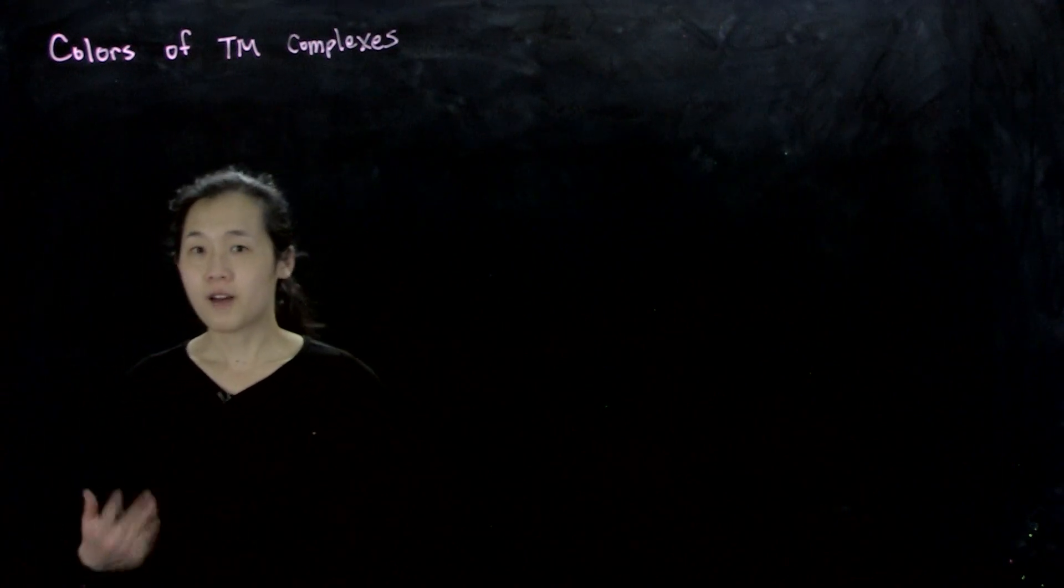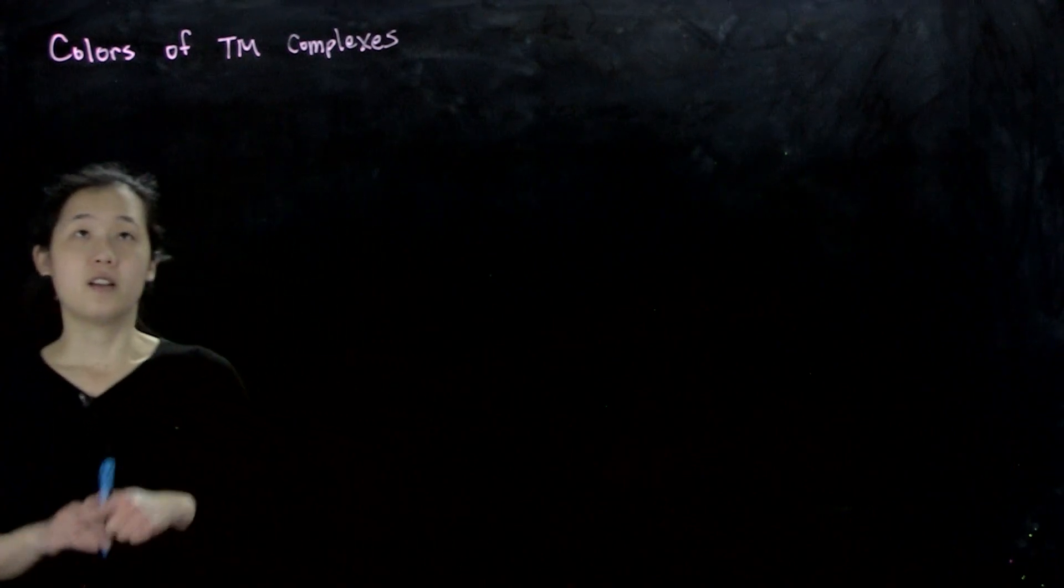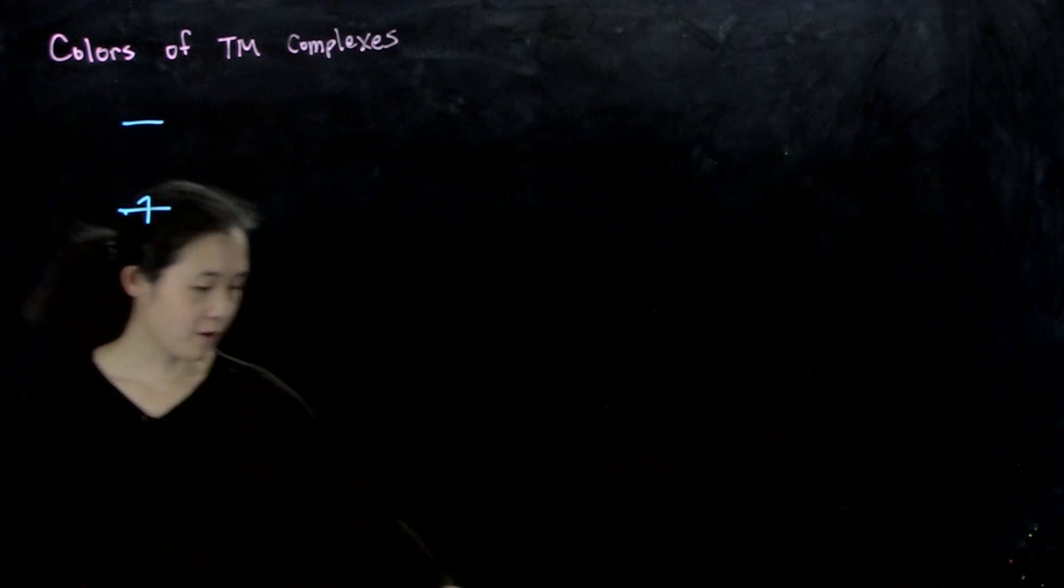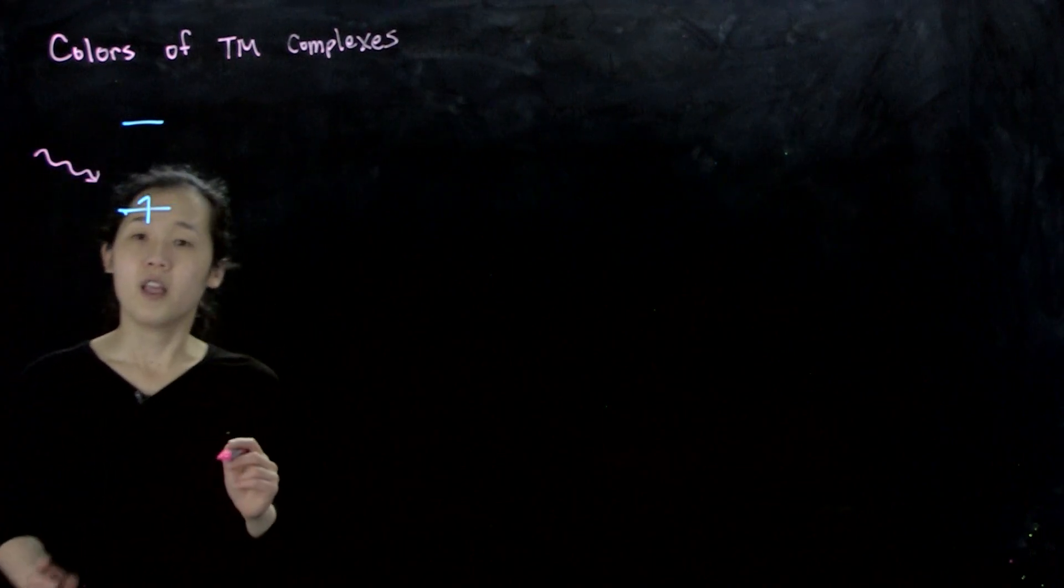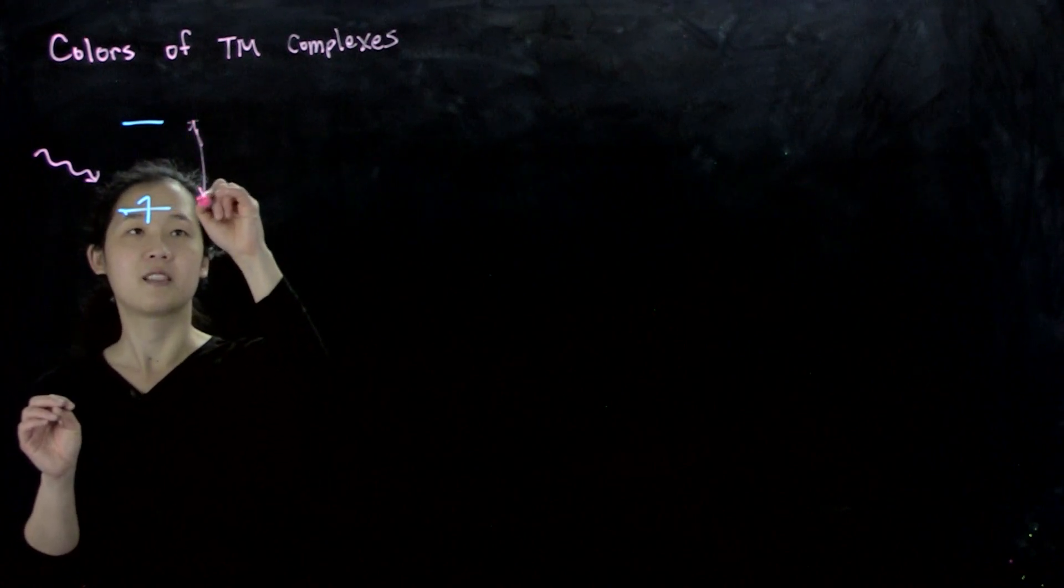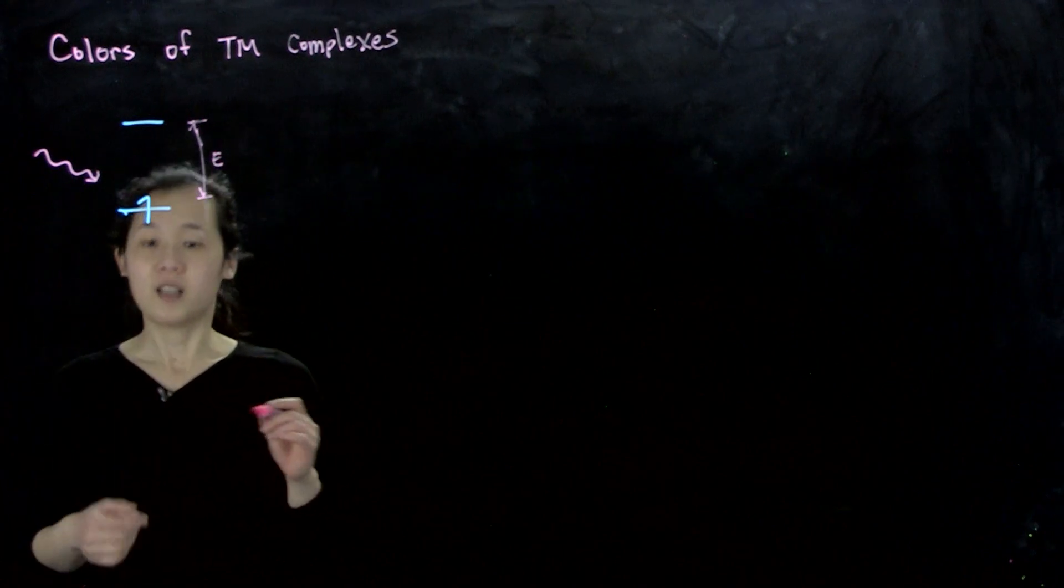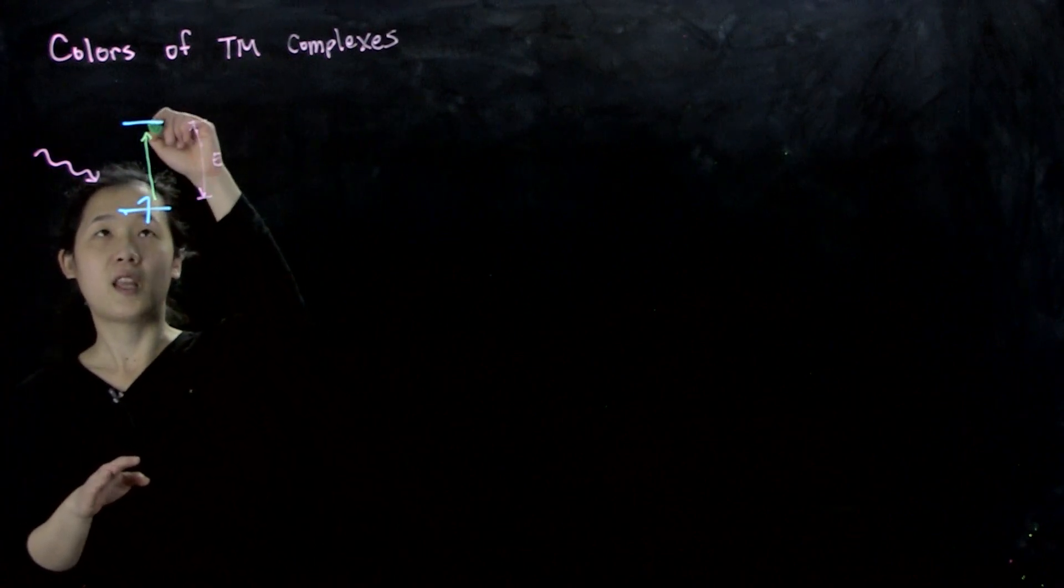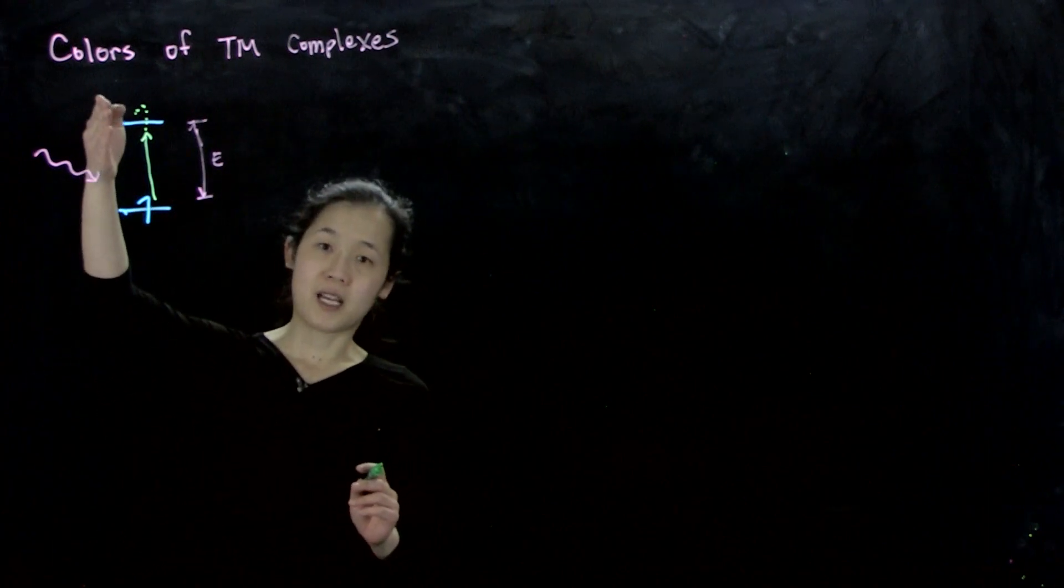We said before that transition metal complexes are often colored, but let's talk about why color happens. If I have two orbitals and one orbital has one electron in it, then if my photon comes in, if the photon is of an energy of this difference, so if the photon has higher energy than E, then that electron can get excited to this orbital here. So now we've absorbed that photon, and that electron is now at that higher energy.